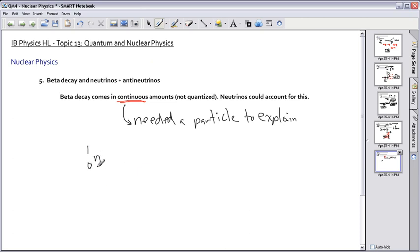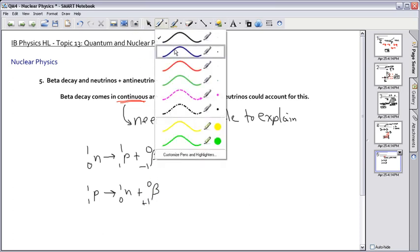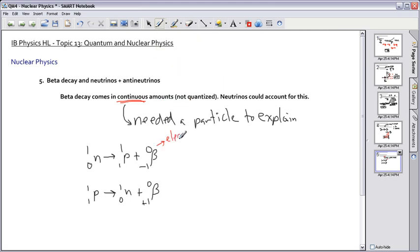So the fact that this happened, they needed a particle to explain that it came in continuous amounts. For example, we have a neutron that decays to a proton plus what we call beta minus, which is actually an electron. Or we could also have a proton that can actually become a neutron. A proton can become a neutron as long as we add something called a positron, which would be plus one. This one here is electron, this one here is called a positron.